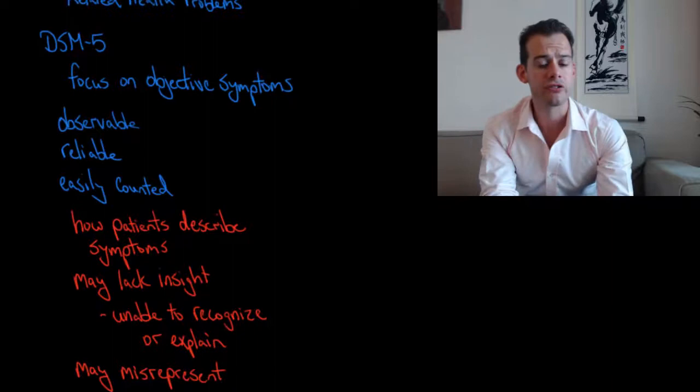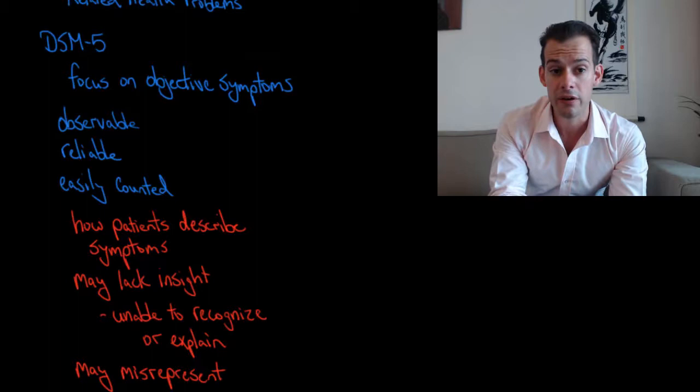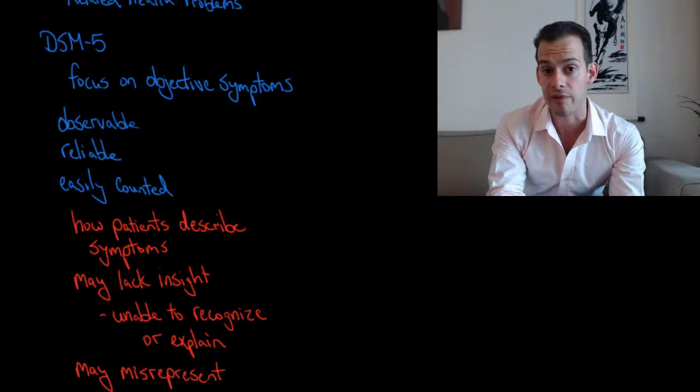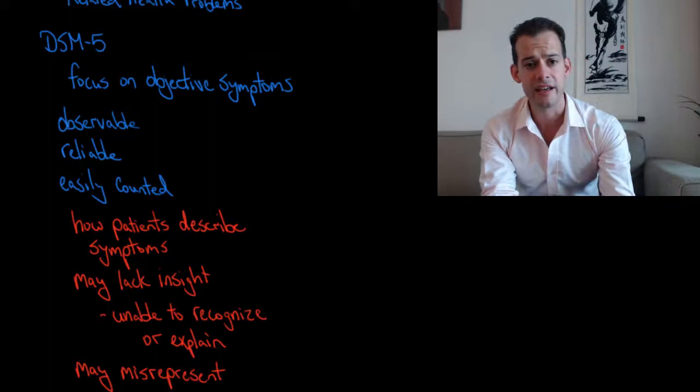Now in the DSM-5, one of the changes was greater focus on objective symptoms of mental illness and this refers to symptoms that are observable, symptoms that are reliable, and symptoms that can be easily counted. And this sounds like a good thing to have more objective criteria for the symptoms of mental illness. But in practice this is very difficult to do and this relates to some of the problems that I've talked about in previous videos.